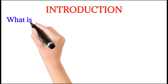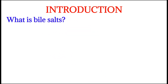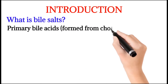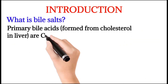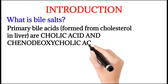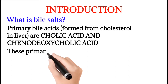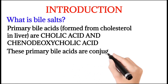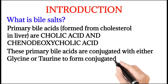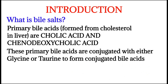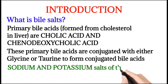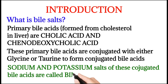First we'll see what are Bile Salts. Primary bile acids formed from cholesterol in the liver are cholic acid and chenodeoxycholic acid. These primary bile acids are conjugated with either glycine or taurine to form conjugated bile acids. Sodium and potassium salts of these conjugated bile acids are called bile salts.